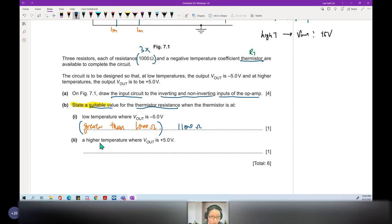Higher temperature, it has to be less than 1000. Any value less than 1000 but not zero. I don't know. You put 900. Easy. Level 1.